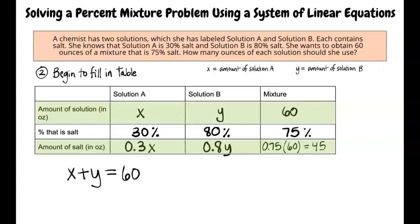What about the second equation? The amount of salt in solution A added with the amount of salt in solution B is 45 ounces. What equation represents that information? The next equation should be 0.3x plus 0.8y equals 45. That's correct.